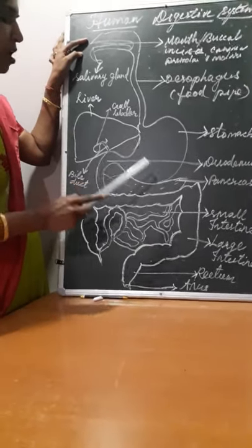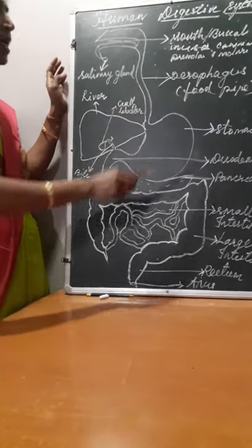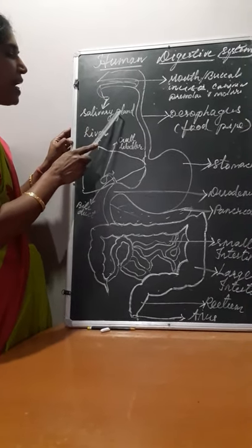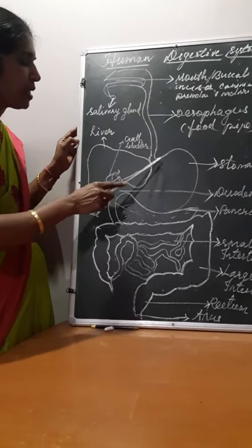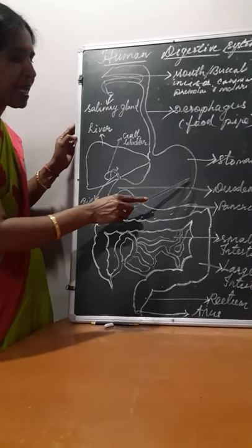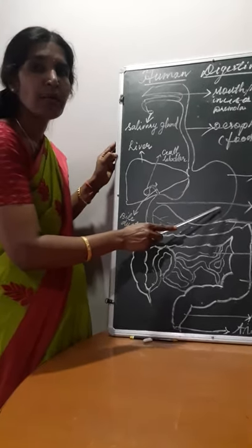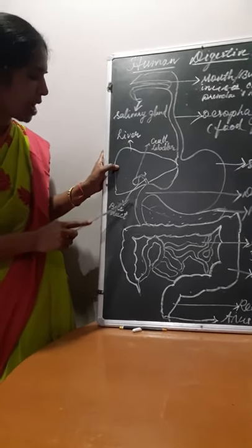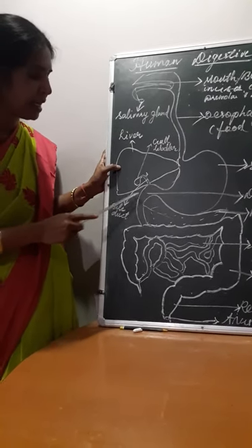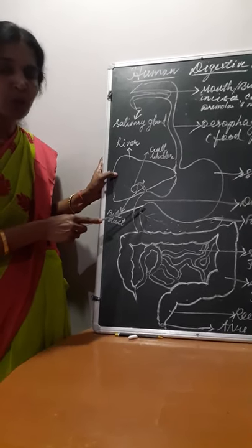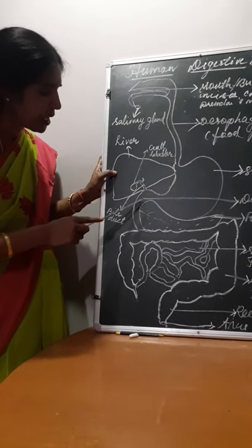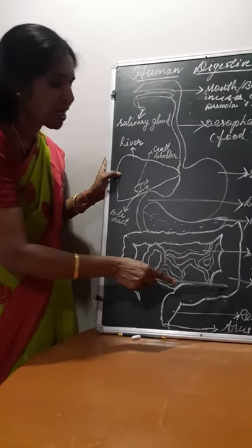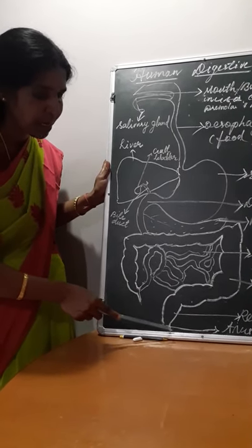Accessory digestive glands are associated with the alimentary canal together and perform the function of digestion. To recap: the alimentary canal includes the mouth with salivary glands, then the food pipe or esophagus, then the J-shaped stomach with gastric glands secreting hydrochloric acid, mucus, and pepsin. In the upper abdomen is the largest gland, the liver, with gallbladder secreting bile juice sent to the duodenum through the bile duct. The pancreas also pours pancreatic juice into the duodenum. In the large intestine, water is absorbed, undigested food is stored in the rectum, and then passed out through the anus.